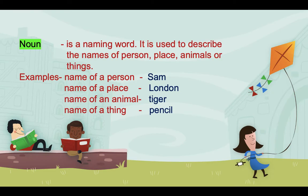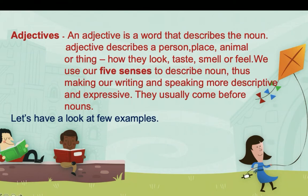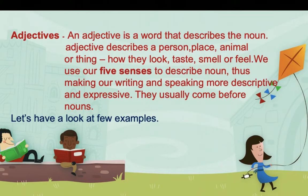Now let's see what is an adjective. An adjective is a word that describes the noun. We use our five senses to describe the noun, and adjectives make our writing and speaking more interesting. We use adjectives to describe a person, place, animal, or thing — to say how they look, how they taste, how they smell, how they feel. So adjectives are used to describe nouns.